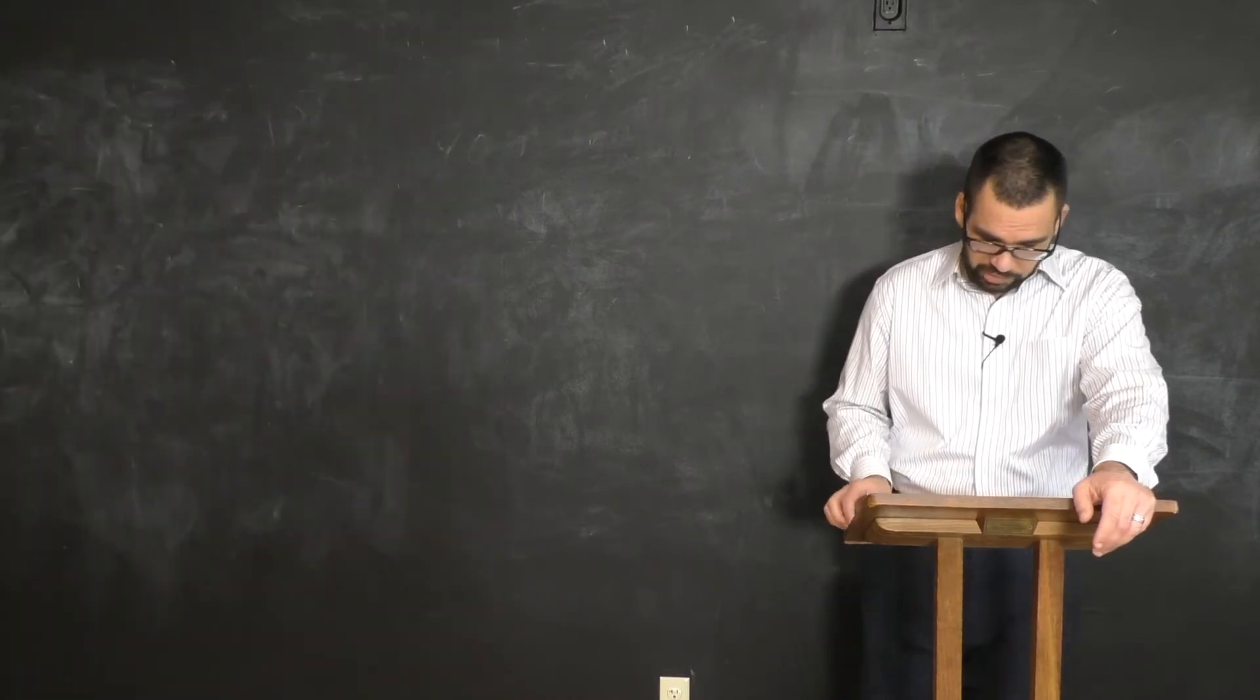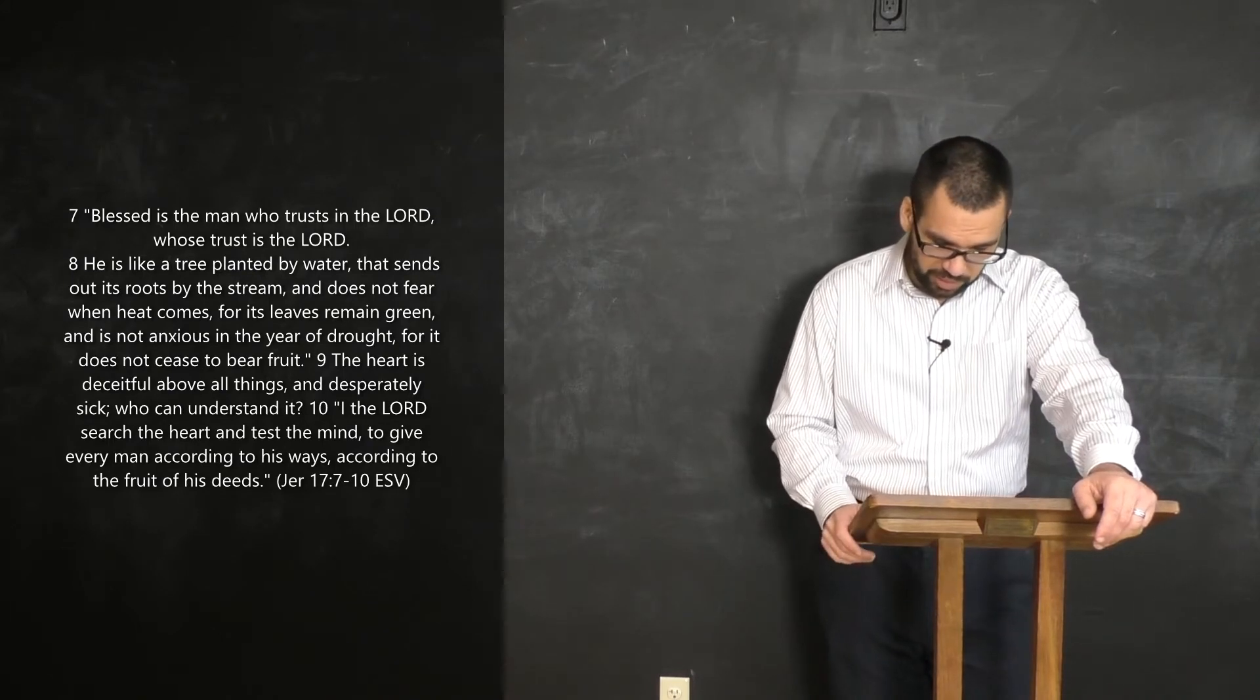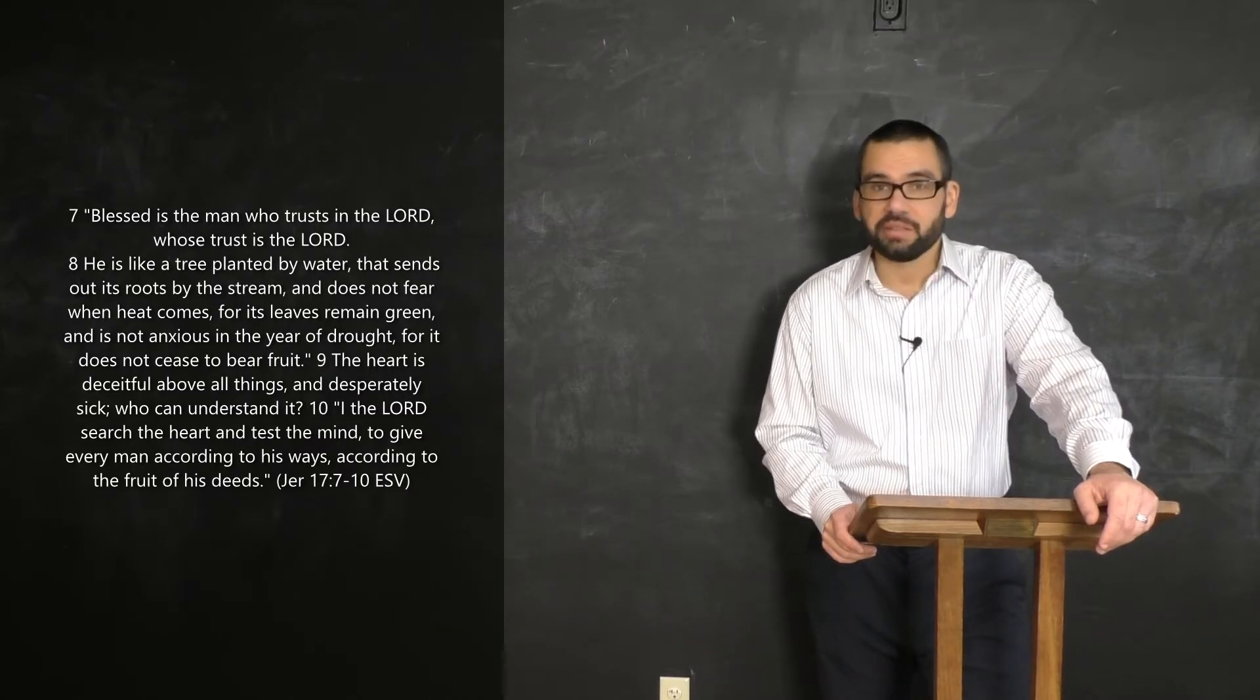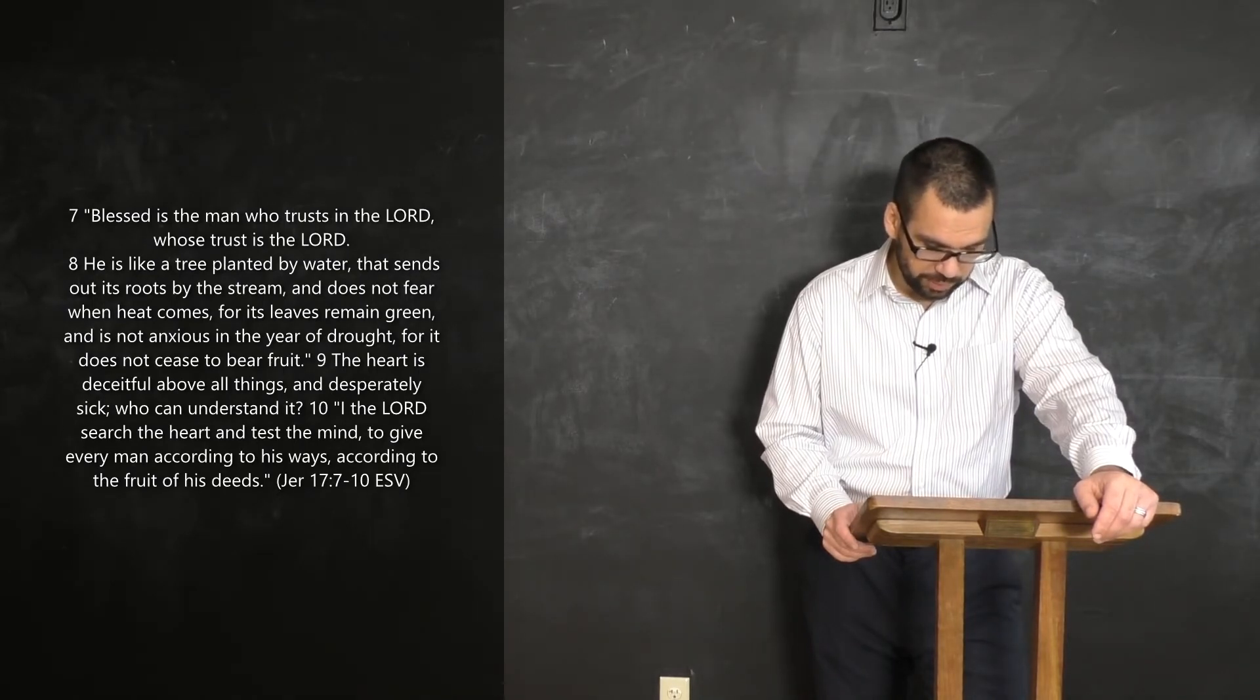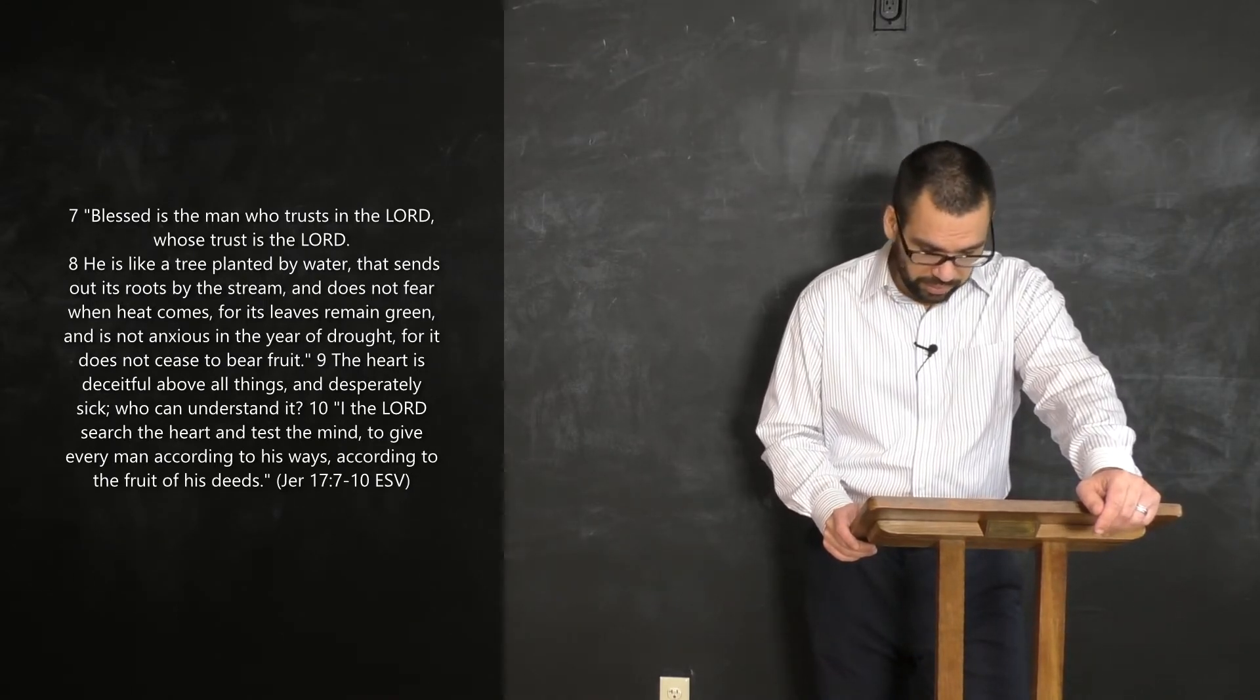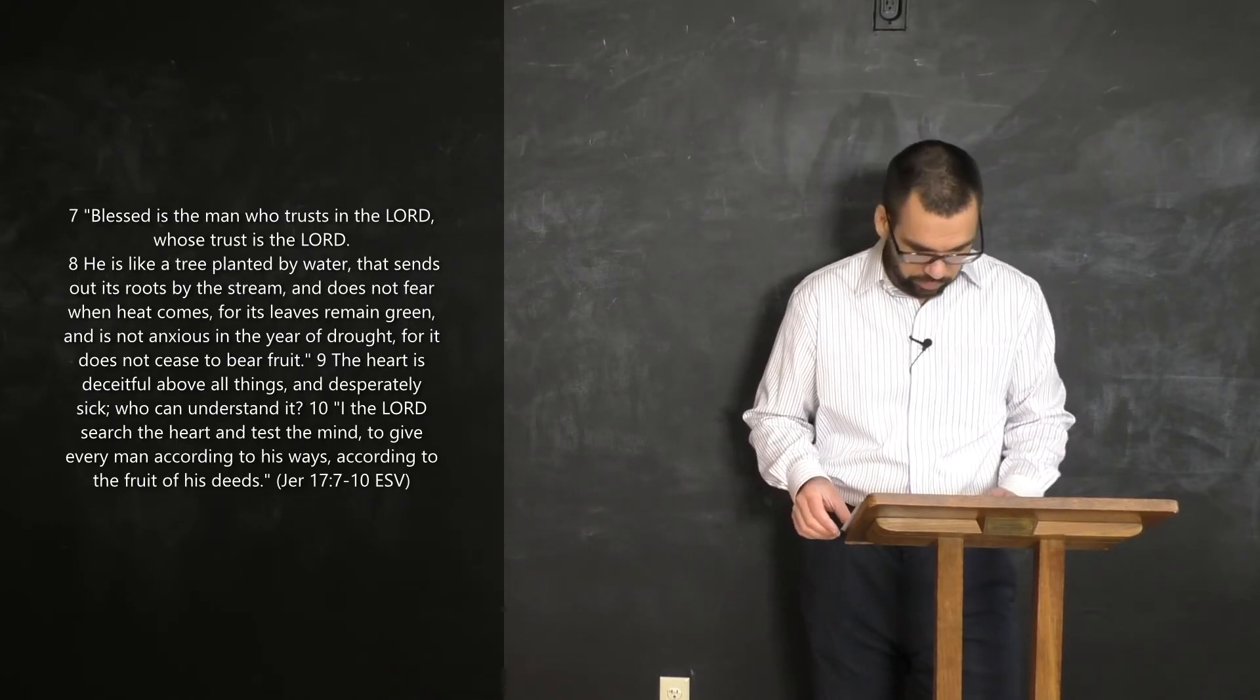Here, God's word, Jeremiah chapter 17. Blessed is the man who trusts in the Lord, whose trust is the Lord. He is like a tree planted by water that sends out its roots by the stream and does not fear when heat comes. For its leaves remain green and is not anxious in the year of drought, for it does not cease to bear fruit. Here's what I'd like us to focus on. Verse 9, chapter 17. The heart is deceitful above all things, and it's desperately sick. Who can understand it? I, the Lord, search the heart and test the mind, to give every man according to his ways, according to the fruit of his deeds.